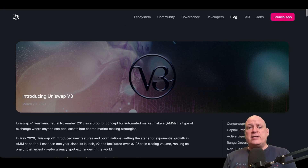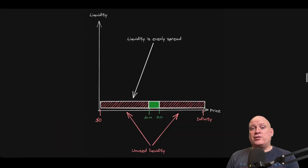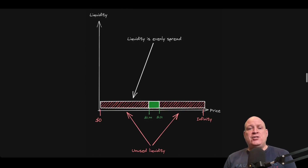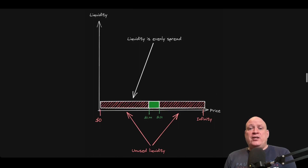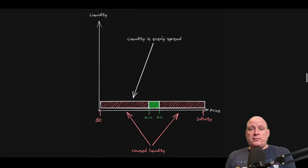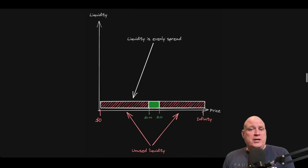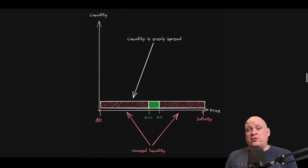Let's use DAI and US dollar coin as the examples. Both of these tokens are pegged to the US dollar, so the swaps will occur between a very thin range, plus or minus 1%. This means that the liquidity provided on this pair is very inefficient, as outside this range the liquidity provided is never going to be used. Nobody wants to sell a US dollar for $0.97, and nobody wants to buy a US dollar for $1.03. Unused liquidity generates no swap fees for the users.